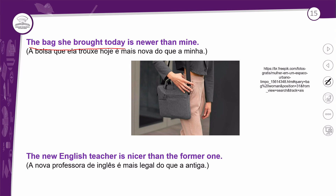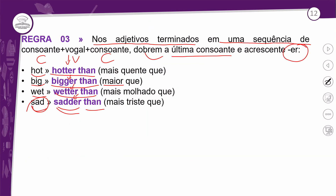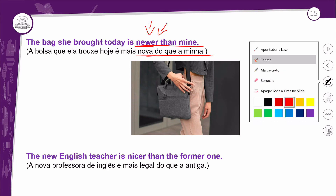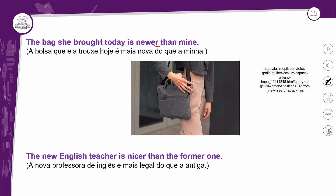Exemplos práticos: 'The bag she brought today is newer than mine' — a bolsa que ela trouxe hoje é mais nova que a minha. O adjetivo NEW é monossilábico, então você só acrescenta o ER. Ele não termina em Y e não tem padrão CVC que exija dobrar a última letra. NEW → NEWER. A gente não dobra a última letra nesse caso.